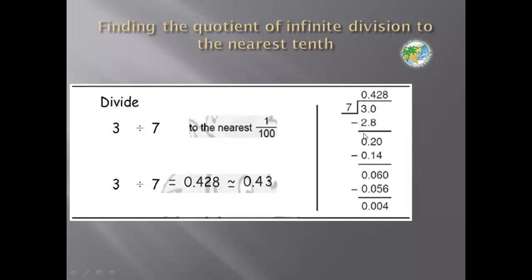We read 20 divided by 7, not 0.20, no. We read 60 divided by 7. We read 56 divided by 7, not 0 point. We write it but not read.